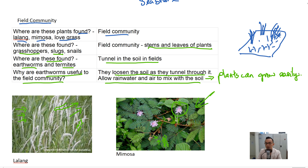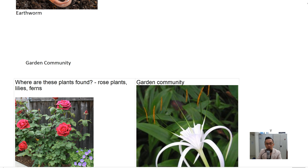Why are earthworms useful to the field community? They loosen the soil as they tunnel through it and allow rainwater and air to mix so that plants can grow easily. If the soil is very hard, the seeds of plants will not be able to germinate. Let's take a look at the garden community in Singapore.